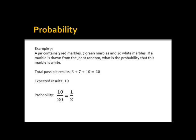Example 7. A jar contains 3 red marbles, 7 green marbles, and 10 white marbles. If a marble is drawn from the jar at random, what is the probability that this marble is white? For the total possible results, we add the number of marbles: 3, 7, and 10, so the total possible results is 20. Since there are 10 white marbles in the jar, the expected result is 10. So the probability is 10 over 20, which is also equal to 1 half.